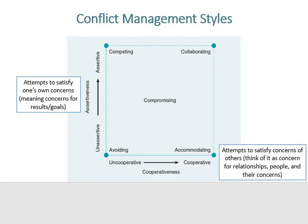For the last big section of this lecture, we're going to look at conflict management styles. A conflict style is defined as a pattern response or behavior that people use when approaching conflict. There are five conflict styles that fall on two dimensions — and if it looks a little familiar to the task-relationship grid from an earlier chapter, it really is. First, we have assertiveness, which refers to attempts to satisfy one's own concerns — your concern for results or goals. Cooperativeness represents attempts to satisfy the concerns of others; think of it as a concern for relationships, people, and their concerns.